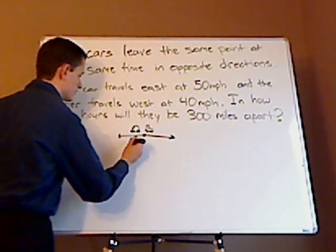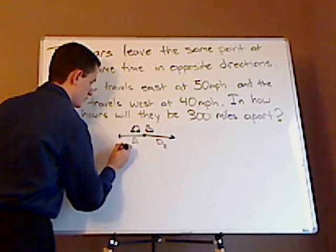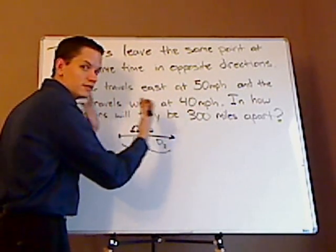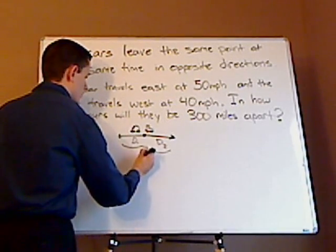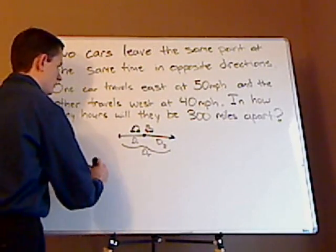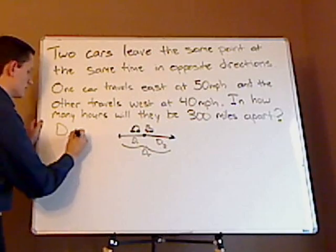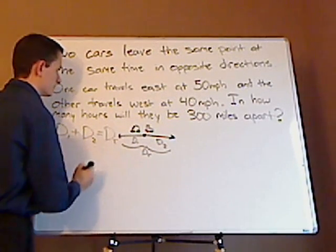So you have two distances and the miles apart, right, is that whole entire distance. You're adding the two distances together. So that's total distance. So let me do this. So the setup is D1 plus D2 equals the total distance apart.